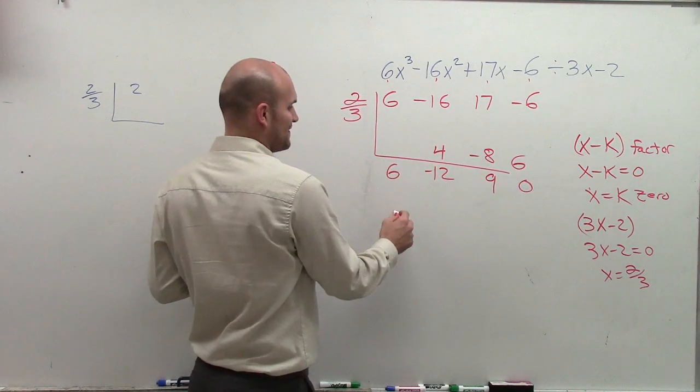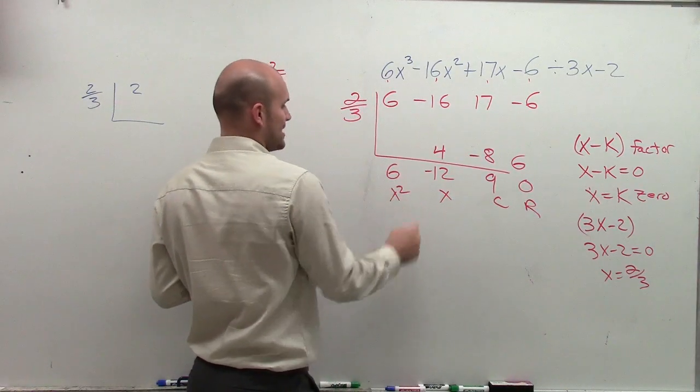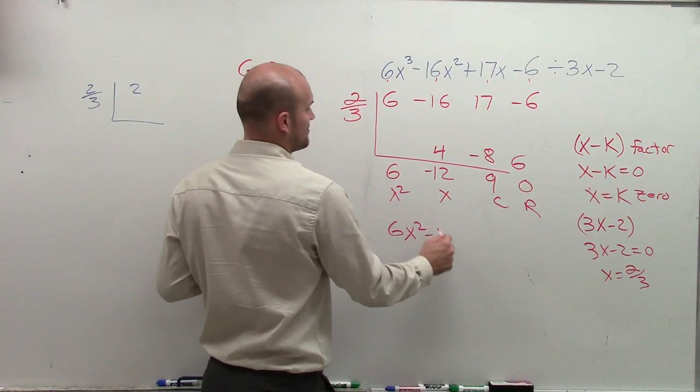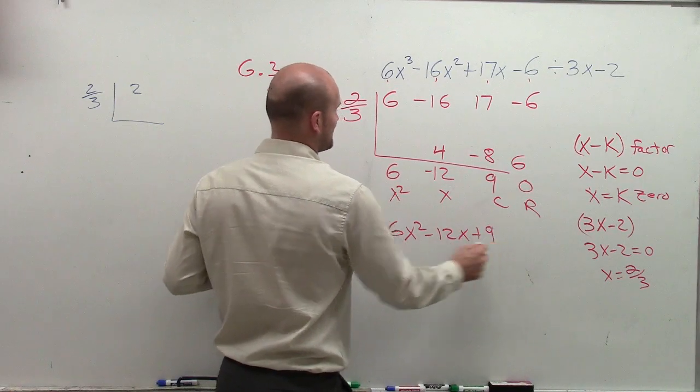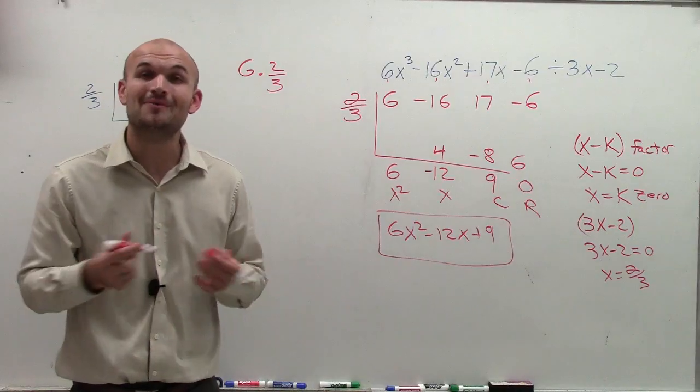Ta-da! Therefore, my final answer - remember, remainder, constant, linear, quadratic. 6x squared minus 12x plus 9. That's going to be your quotient. And you're all done. There you go. Hope you enjoyed.